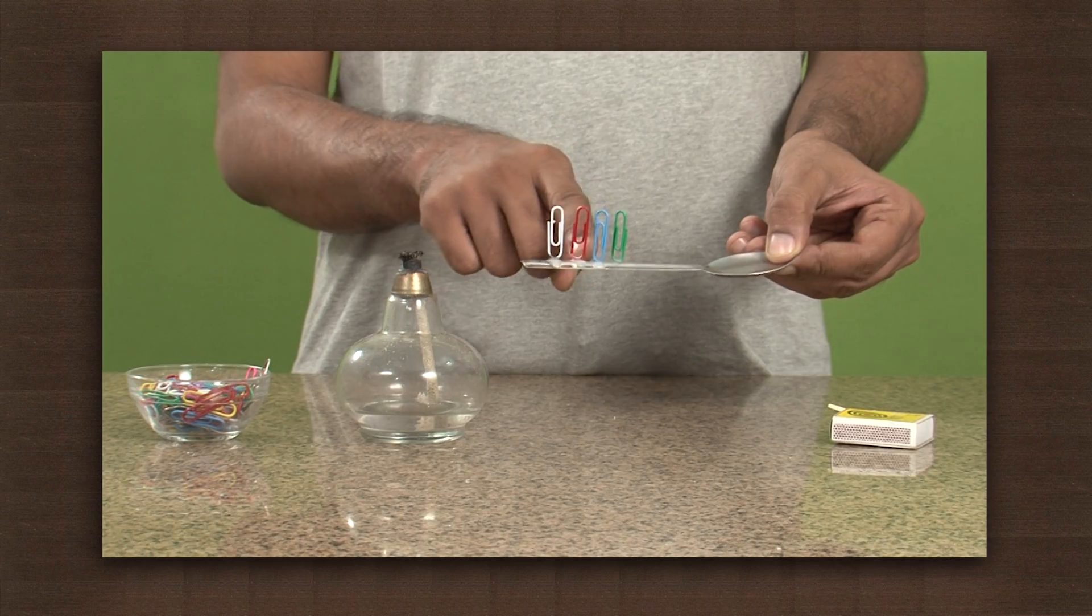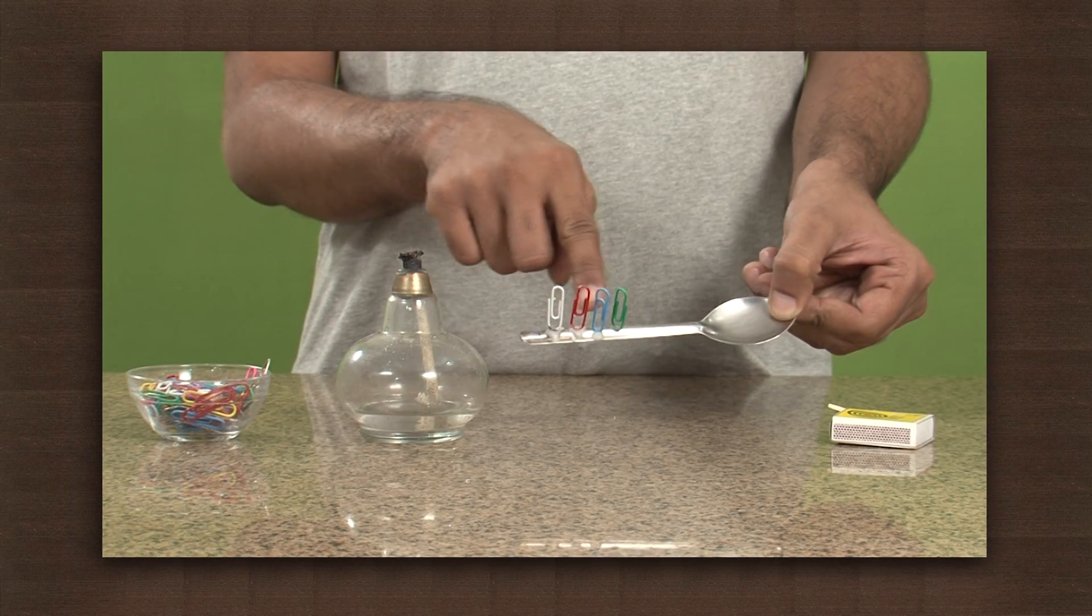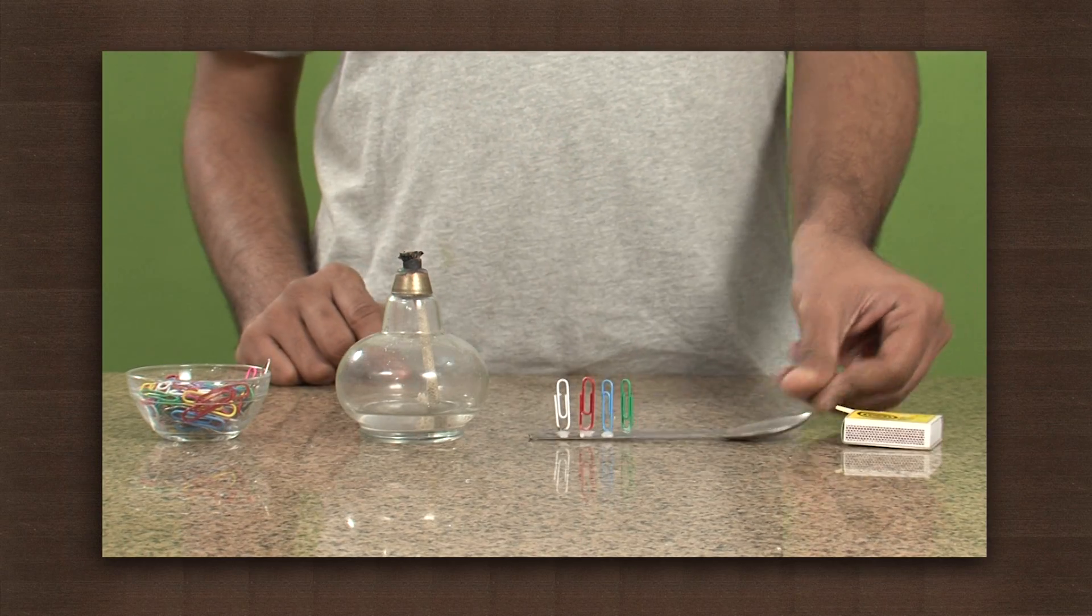Take the spoon, melt the wax of the candle and use it to stick a few pins on the metal spoon at regular intervals like this.